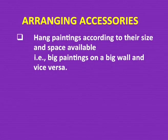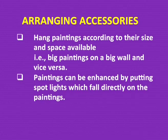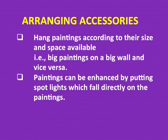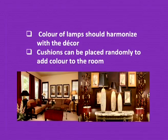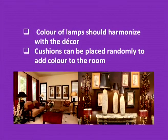Now we need to understand how to arrange accessories. Hang paintings according to their size and the space available — big paintings on big walls and small paintings on small walls. Paintings can be enhanced by putting spotlights that fall directly on them to increase and enhance their beauty and details. Hang all paintings straight and even, not lopsided, so they follow a uniform code throughout the wall. The colour of lamps should be harmonized with the entire decor of the house.